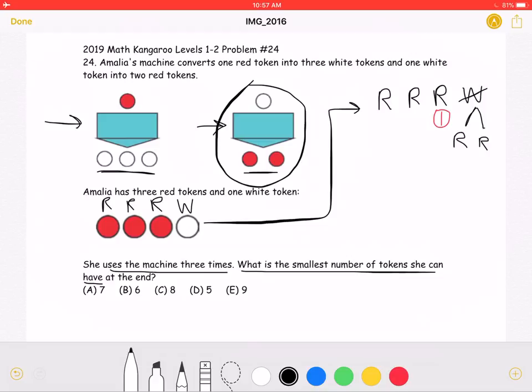Now, we must use a red token to three white tokens because we don't have any other white tokens left to convert. So she can exchange one red token for three white tokens. And this is the second conversion.